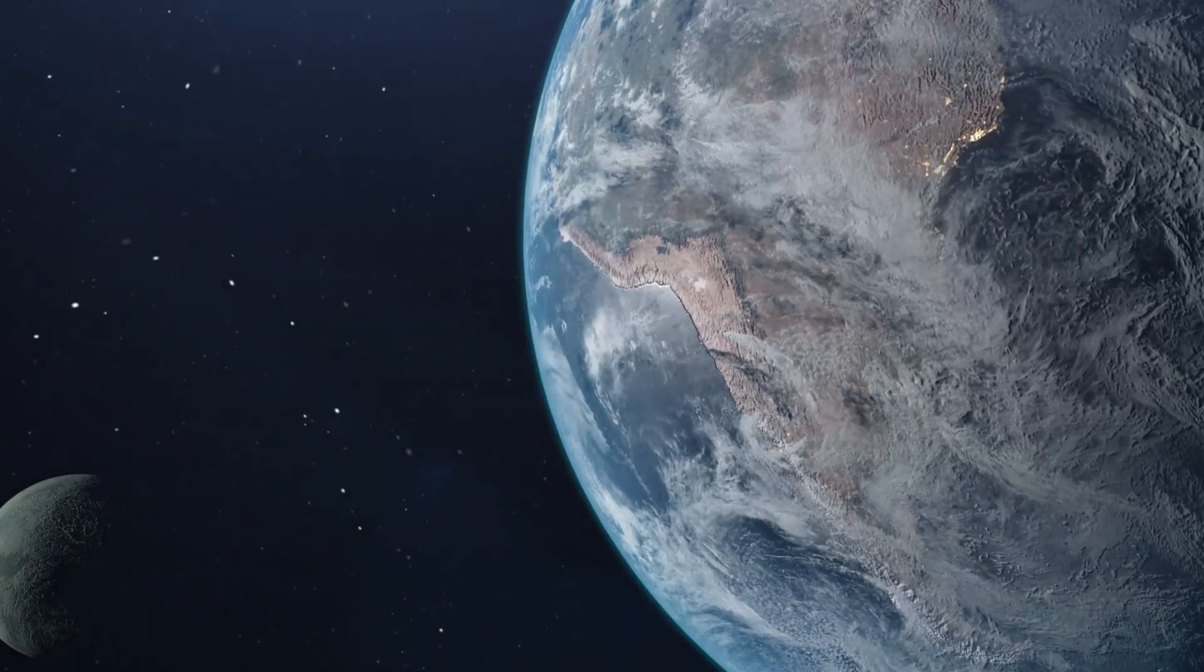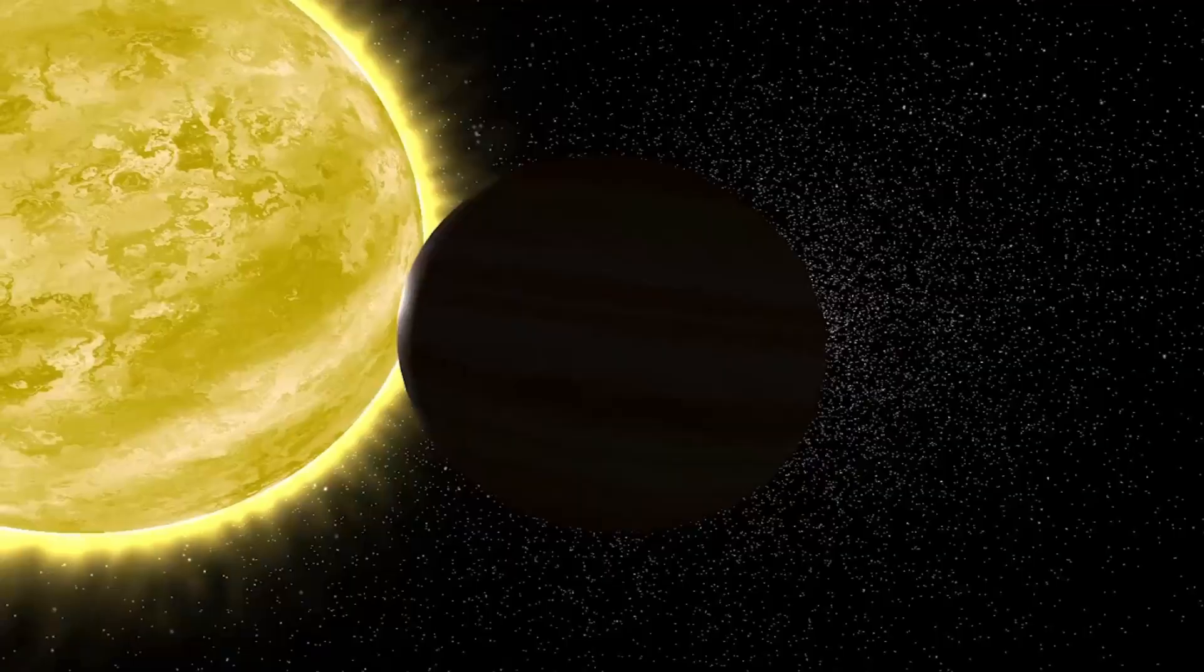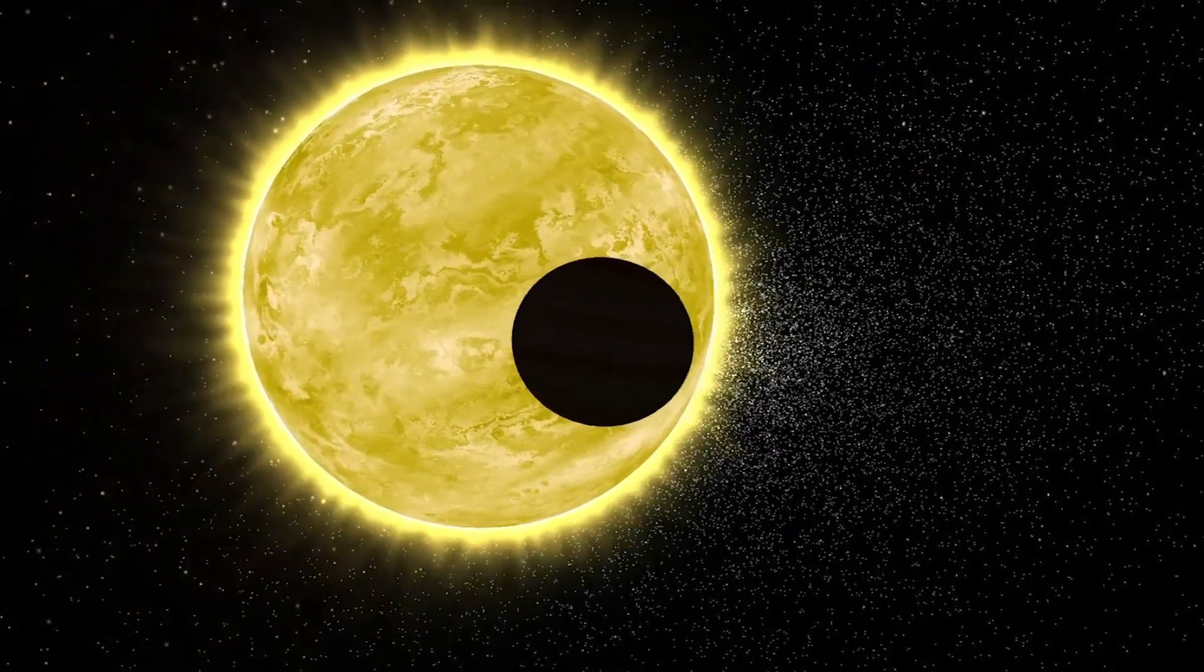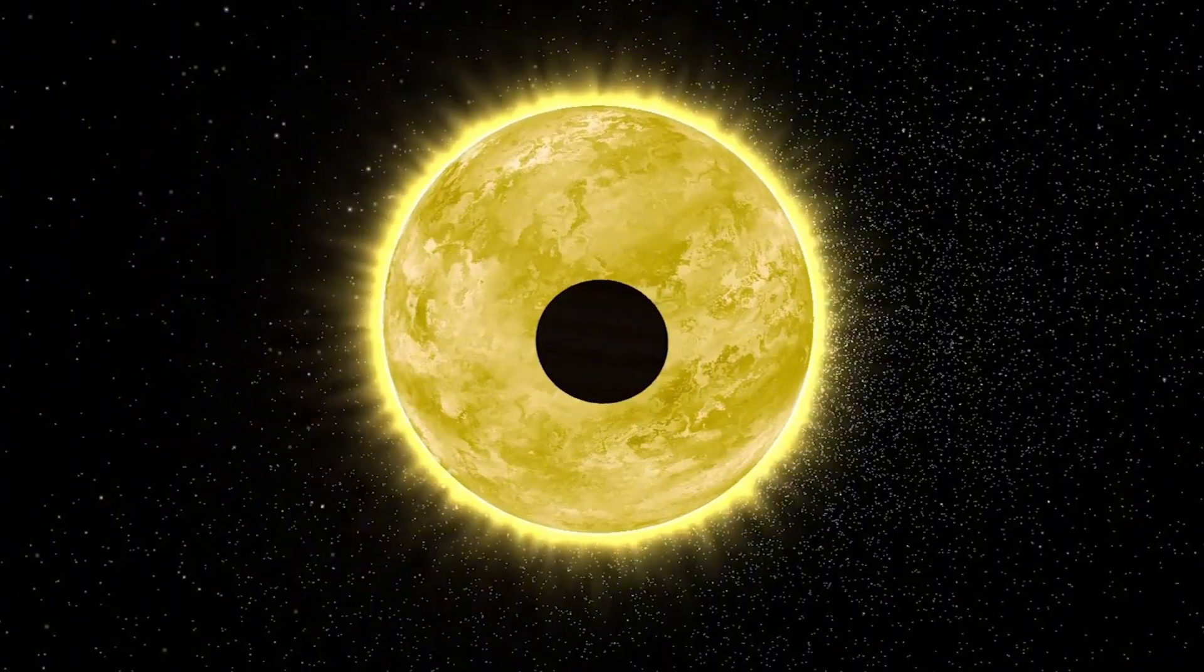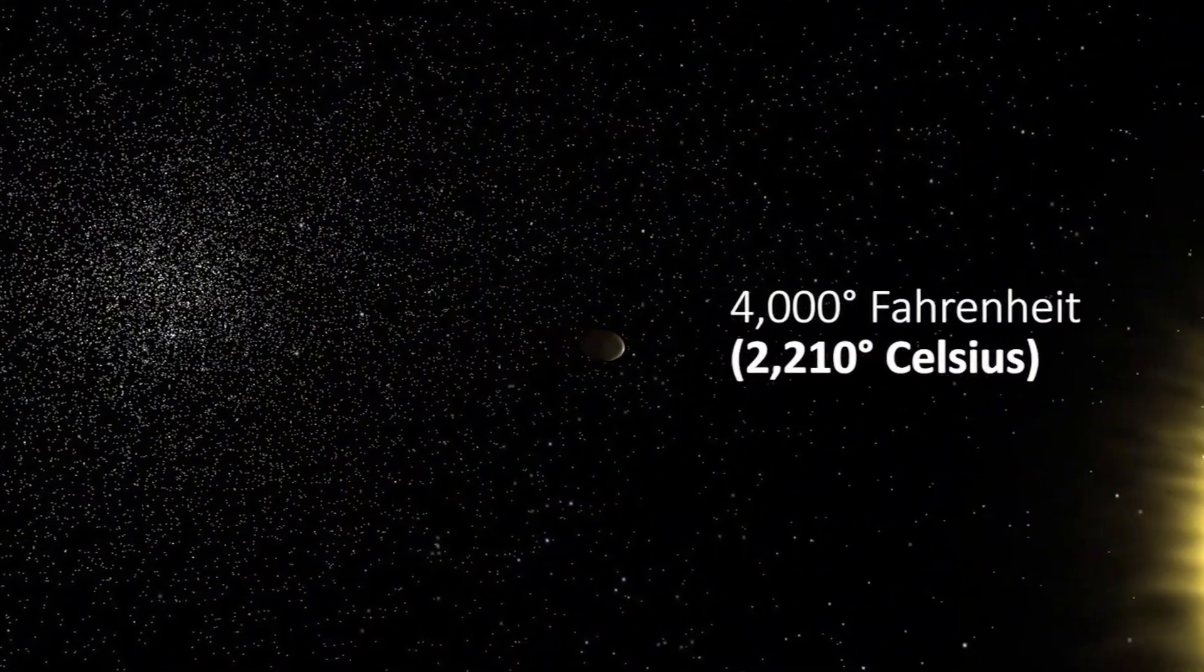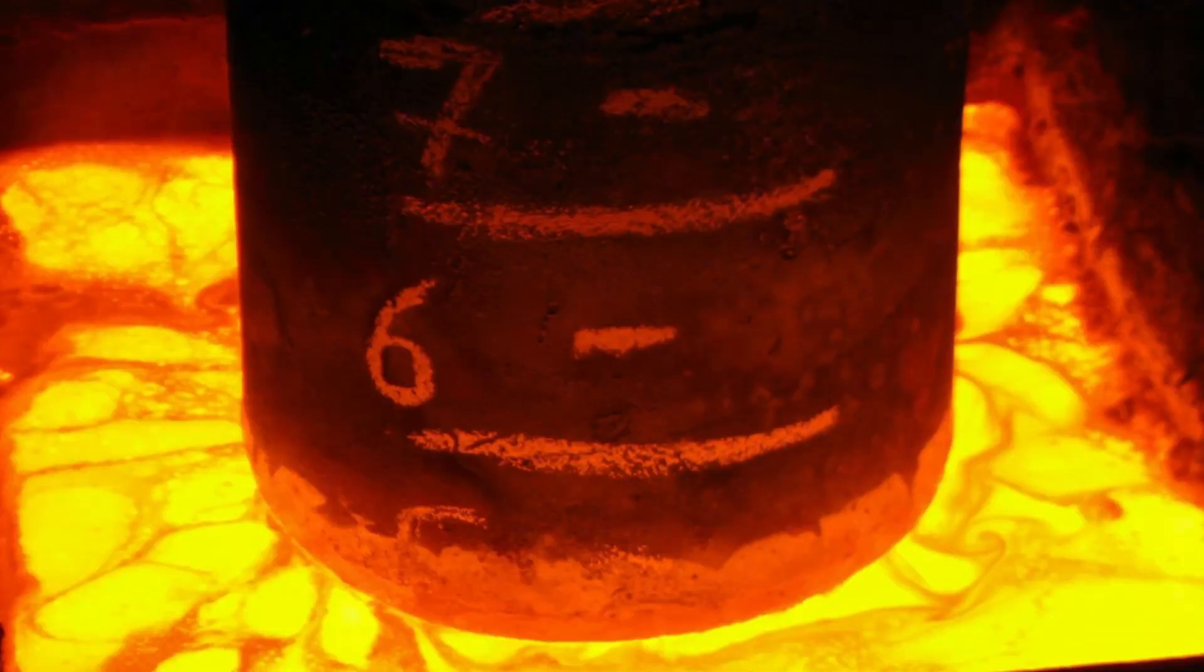This planet orbits so close to its star that its year lasts just 26 hours. Let that sink in. While you're going through a normal Earth day, WASP-12b has completed an entire orbit around its sun. But this extreme proximity has some consequences. First, the planet is heated to about 4,000 degrees Fahrenheit. That's hot enough to melt titanium. But it gets weirder.